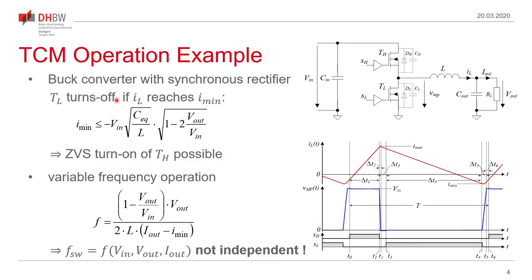The equation for the minimum inductor current is given here. If we control the converter to turn off when we reach this minimum current, we have a variable frequency operation dependent on the output voltage, input voltage, inductor value, this minimum value, and the output current. Therefore the switching frequency is not independent — it depends on the output current as our control variable, making it difficult to achieve ZVS together with spread spectrum modulation without changing the output power.